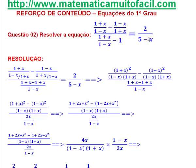Vamos analisar. Olha só: o x não pode ser 1. Se o x for 1, isso aqui vira 0 e a matemática não aceita o denominador 0. O x não pode ser menos 1, porque isso aqui vira 0 e a matemática não aceita.